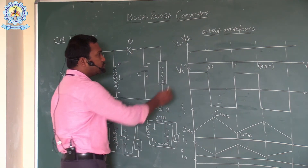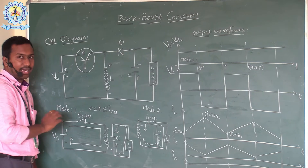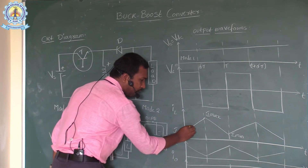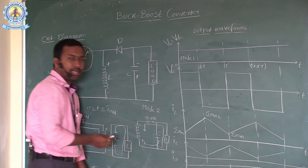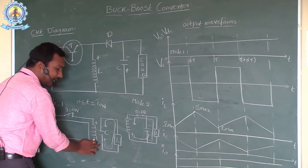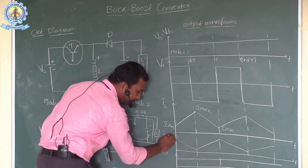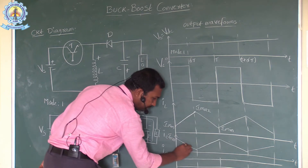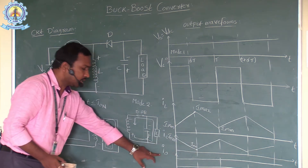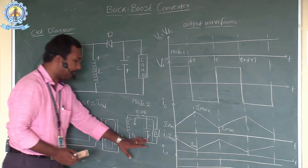During mode one of operation, the inductor stores energy. If the inductor stores energy from minimum value to the maximum value, we have to show this graph linearly — the inductor stores energy linearly from I-minimum to I-maximum. The capacitor discharges from maximum value to the minimum value during this mode. In this condition, the output current depends only on the capacitance.